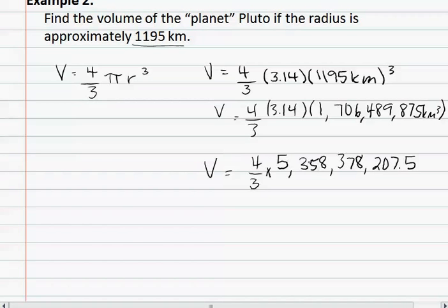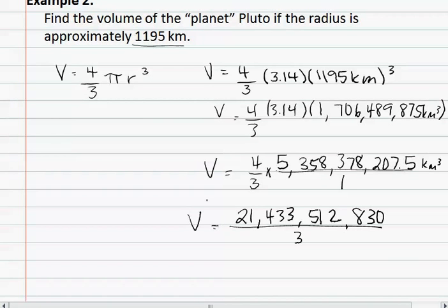Next, we multiply it by the four, treating the second part as our fraction, seeing that we'd multiply the tops and multiply the bottoms, or the numerators and the denominators. When we multiply the numerators, we get 21,433,512,830, and we still have this over three. When we do our final division, we find that the volume equals 7,144,504,277 kilometers cubed.